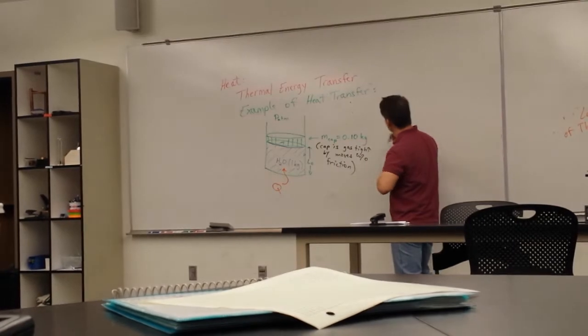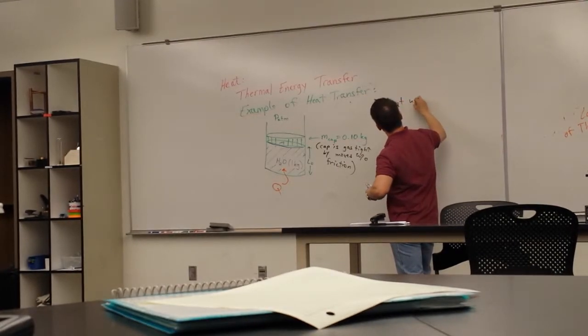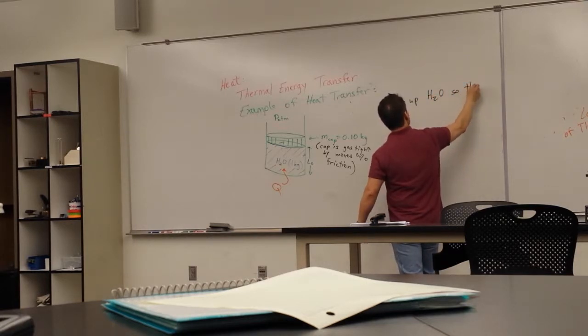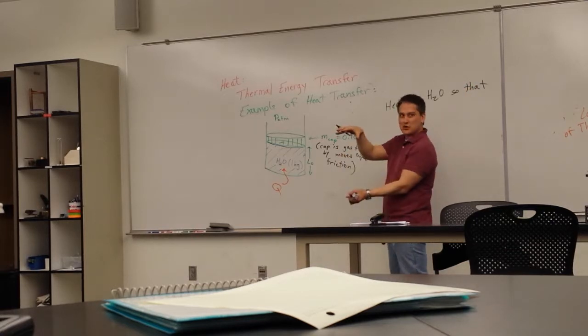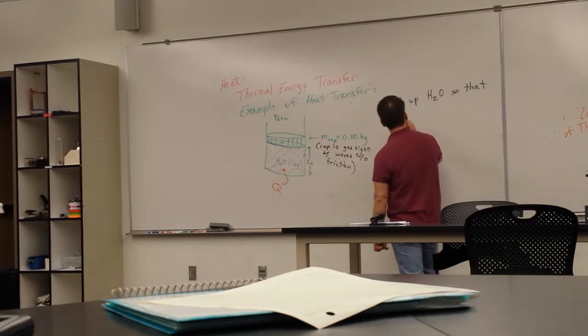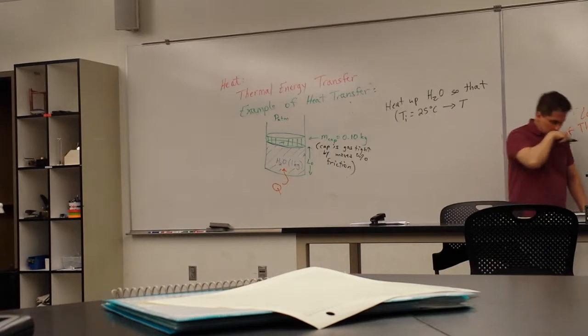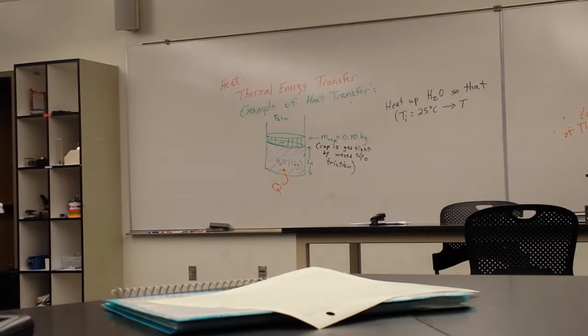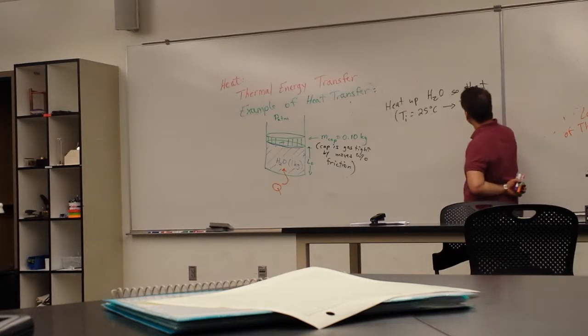So I'm going to add heat, and I'm going to heat up the liquid, so that there's a certain amount of evaporation. And when there's a certain amount of evaporation, we'll make T initial 25 Celsius. And it goes to a final temperature, but it's still at atmospheric pressure for the most part. So a final temperature of 100 Celsius. That's not too much of a stretch.